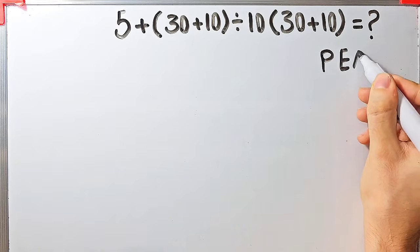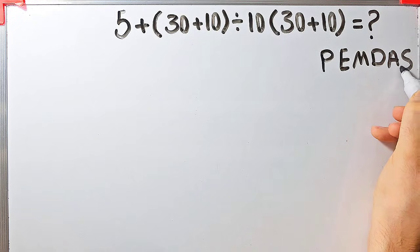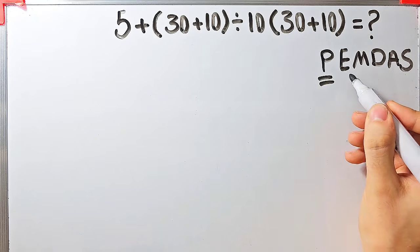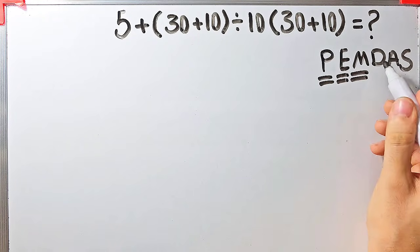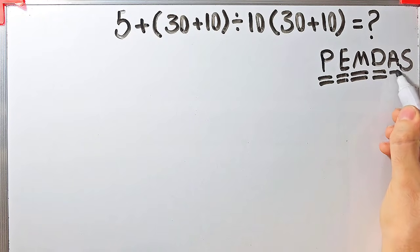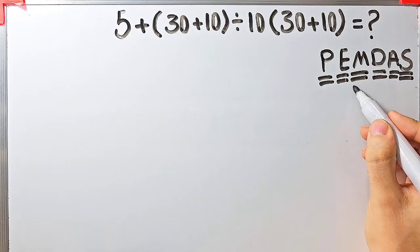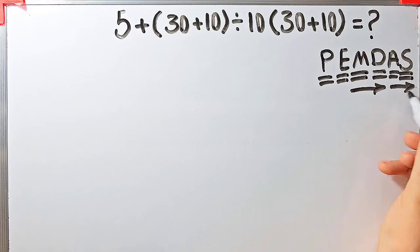PEMDAS shows the priority of mathematical operations. In this rule: P stands for Parentheses, E stands for Exponent, M stands for Multiplication, D stands for Division, A stands for Addition, and S stands for Subtraction. Multiplication and division have the same level of priority; also addition and subtraction have the same level of priority. When we have both in an expression, we start from the left and simplify the question.